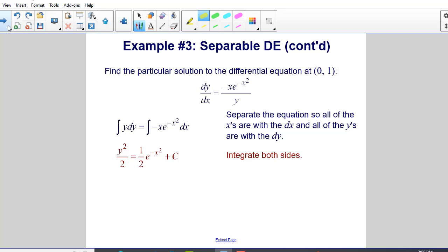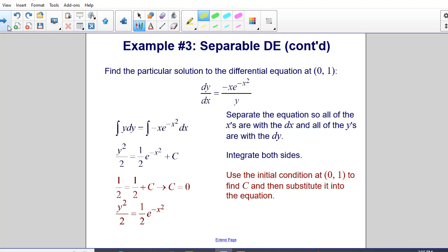When I do integrate both sides I get y squared over two is equal to one half e to the negative x squared plus c. I use the initial condition zero one to find c and then substitute it into the equation.